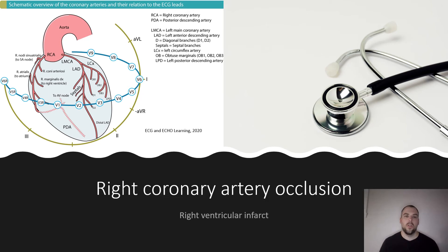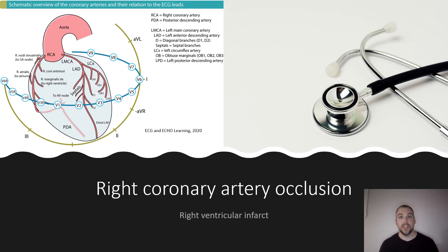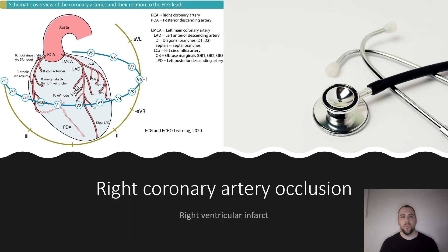In Ontario, we have the ability to do 12-leads, and more importantly, we have the ability to interpret 12-leads with a pretty good degree of accuracy. So we can determine in the field if somebody is having a STEMI, and more importantly, we can determine what artery is likely involved. In the setting of a right ventricular infarct, we can determine with really good accuracy if the right coronary artery is occluded. We already mentioned the right coronary artery feeds the right ventricle, and it also feeds the SA node.